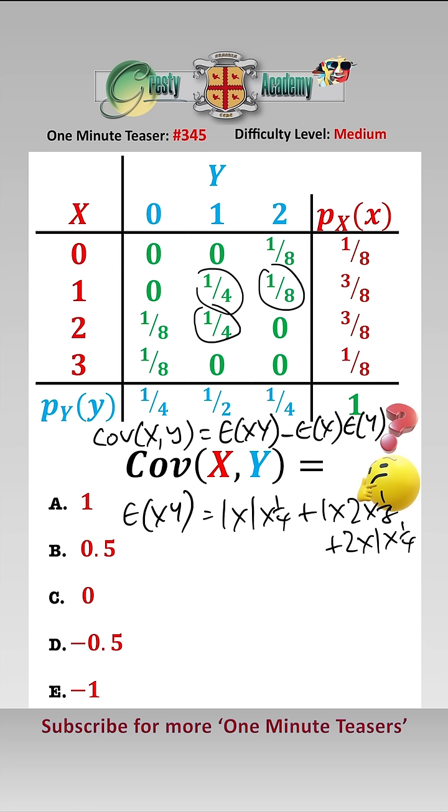And that equals 1. The expected value of X, we look at the red bits. So that equals 1 times 3 eighths, add 2 times 3 eighths, add 3 times an eighth.